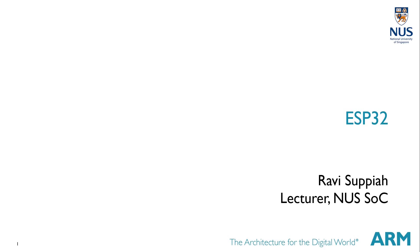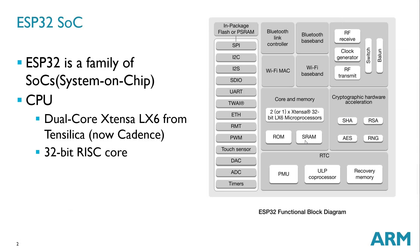Hi, welcome to the lecture on the ESP32. The ESP32 is a family of SoCs, or system on chip. It consists of single or dual core configurations with the Xtensa LX6 from Tensilica, now known as Cadence, and it's a 32-bit RISC core system.